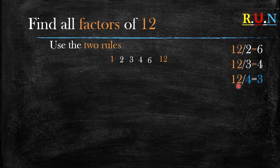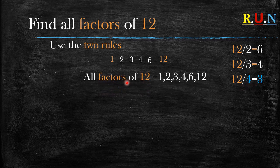Now when we say 12 divided by 4, this is a tricky part because it gives us 3. When you look in the list of numbers we already have a 3 and a 4 — it's just turned around. In all cases, once you see this it means you have found all factors of that number. So all factors of 12 are 1, 2, 3, 4, 6, and 12.